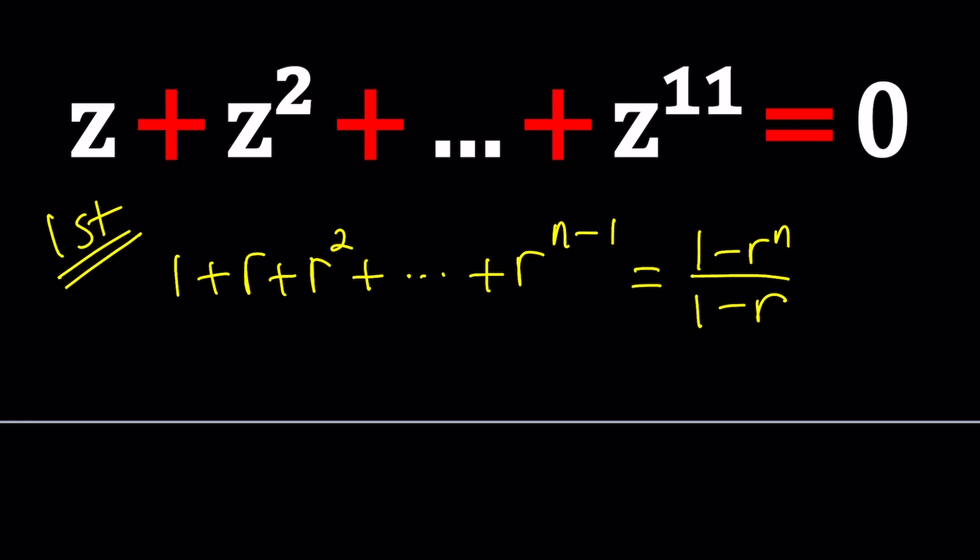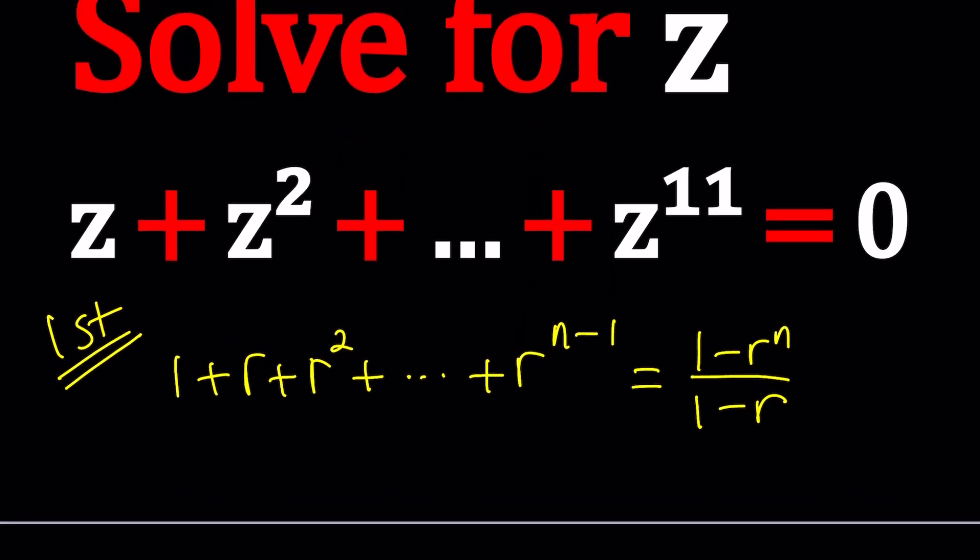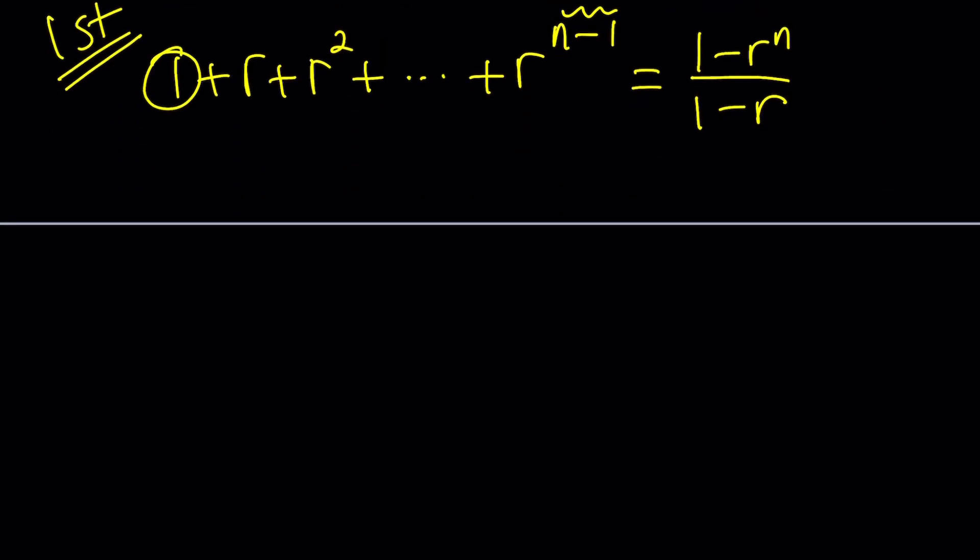Of course, finite geometric series, you can always find the sum. In the infinite case, r needs to be between negative 1 and 1 in order for this sum to converge so you can find the answer. But in this case, it's good because it's finite. So how can I make my sum look like this? Notice that I don't have a 1 in the sum. And the last term is z to the power 11, which indicates that 11 should be n minus 1, which means n equals 12. But we're missing the 1. So what should we do?